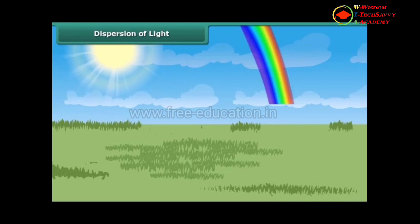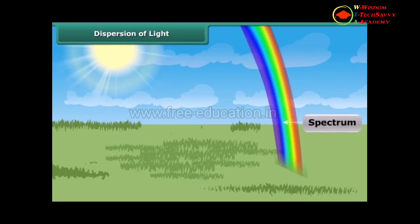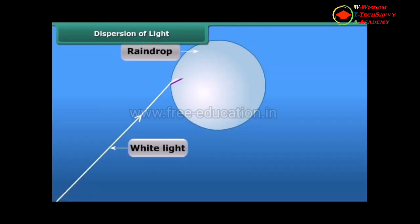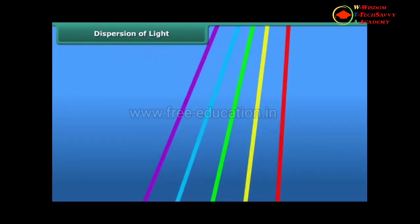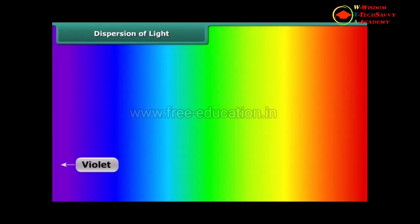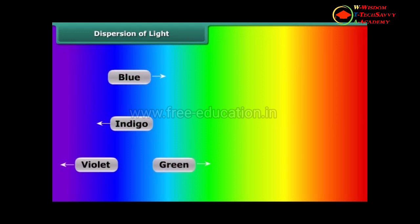Coming back to the rainbow, we can now say that the dispersion of white light passing through the water droplets formed the rainbow. The colors can be seen in the following order: Violet, Indigo, Blue, Green, Yellow, Orange, and Red — or VIBGYOR.